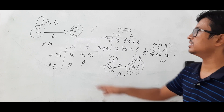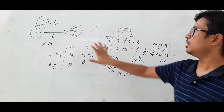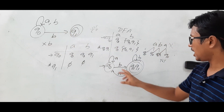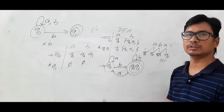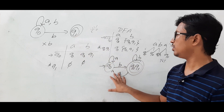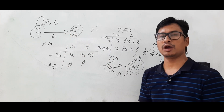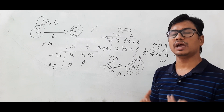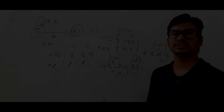So this DFA accepts exactly the same strings as the NFA — only strings ending with B — and rejects everything the NFA rejects. This is the equivalent DFA for the given NFA. I hope you have understood. If not, don't worry — I will take a few more examples for better understanding. Thank you so much.